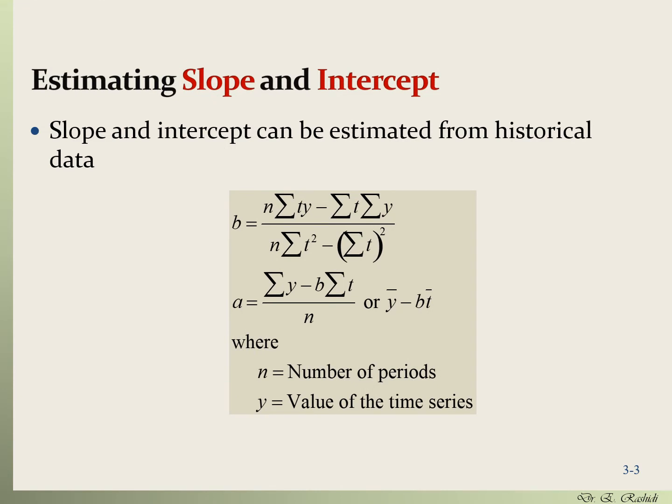All you need to understand about the linear trend formula are its two components: the intercept a and the slope b. The slope and intercept can be estimated from historical data — your past data. Let's estimate these two components.